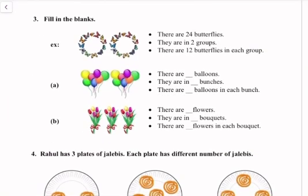Question number 3: fill in the blanks. For example, there are 24 butterflies, they are in two groups, and there are 12 butterflies in each group. First of all, we will count the total number of balloons: 1, 2, 3, 4, 5, 6, 7, 8, 9, 10, 11, 12, 13, 14. There are 14 balloons.